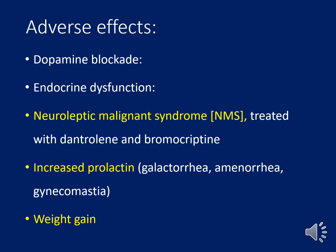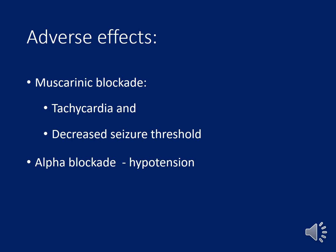Other dopamine blockade adverse effects include endocrine dysfunction. Neuroleptic malignant syndrome is treated with parenteral dantrolene and bromocriptine. Blockade of D2 receptors increases prolactin release, leading to galactorrhea, amenorrhea, and gynecomastia. Adverse effects due to muscarinic blockade include dry mouth, blurred vision, constipation, tachycardia, decreased seizure threshold — precipitating seizures — and alpha-1 blockade leading to postural hypotension.